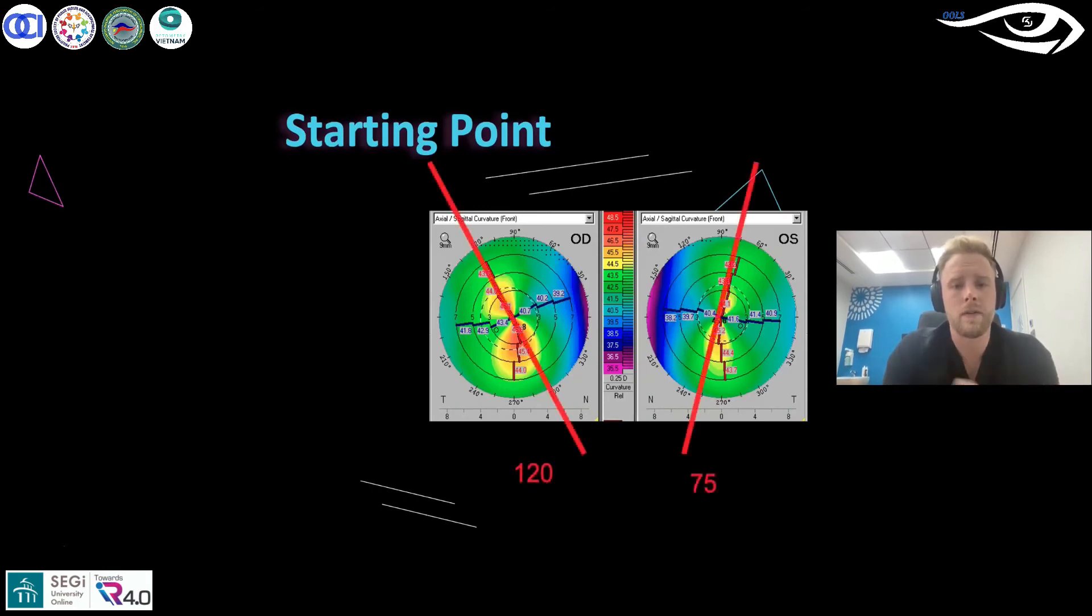If we just look at the front surface here, what I've done is I've taken the front curvature of the right eye and the left eye. You can actually see where the sill is. Using the same principles of with-the-rule and against-the-rule astigmatism, we can tell that a good starting point would be in the right eye roughly 120 degrees axis, left eye roughly about 75. We're just trying to line up the meridian.